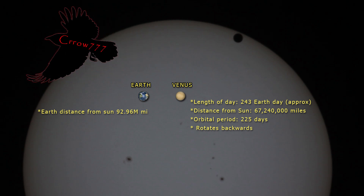What I have here in the background is a still from the footage I'm going to show you. In the upper right of the solar disk, you see Venus coming into frame, transiting the Sun. Below, I've scaled two representations of Earth and Venus — Venus matches what you're looking at here from the real still, just to show you the difference in size. Earth is roughly 92 million miles from the Sun, where Venus is 67 million miles. The orbital period of Venus is 225 days. It rotates backwards, but the length of a day is 243 Earth days.